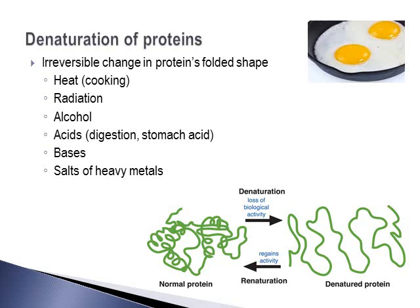In the second segment, we're going to start by talking about denaturation of proteins. Denaturation of proteins involves irreversible changes in a protein's folded shape, and this can occur both inside and outside of the body.